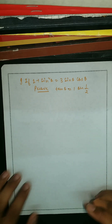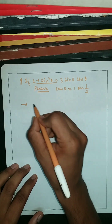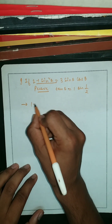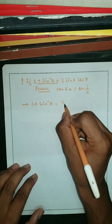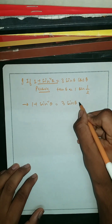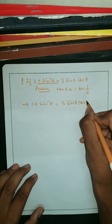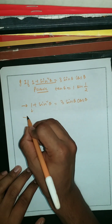Let's see how to do this question. It's a question of trigonometry from NCERT Exemplar. First, I'm going to rewrite this: 1 + sin²θ = 3 sinθ cosθ.